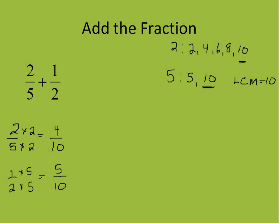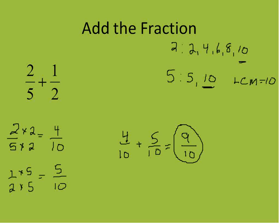Converting these two fractions to have a common denominator of 10 is definitely a prerequisite skill. So we rewrite the question: 2/5 is the same as 4/10, and 1/2 is the same as 5/10. Now we just need to add: 4/10 plus 5/10. We add the numerators, the denominator remains the same, and 9/10 is already in lowest terms — that's our final answer.